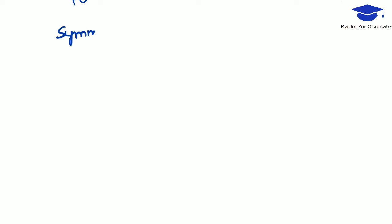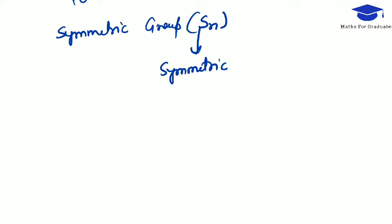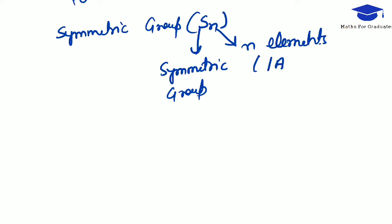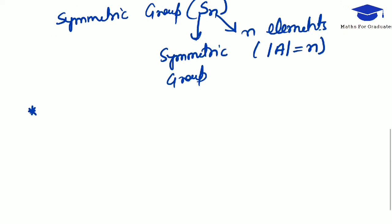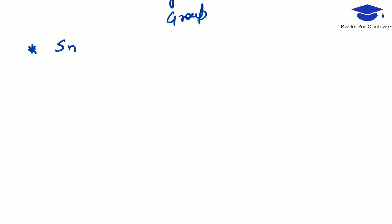Let us understand what a symmetric group is and how we denote it. It is denoted by Sn, where S represents symmetric and n represents that this symmetric group contains permutations of a set having n elements. That means the cardinality of that set A is n.